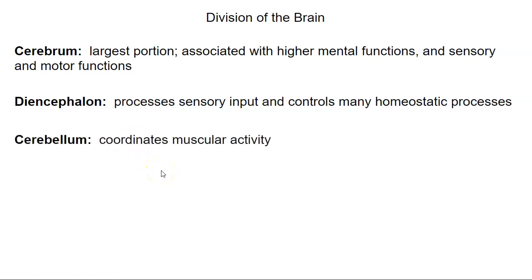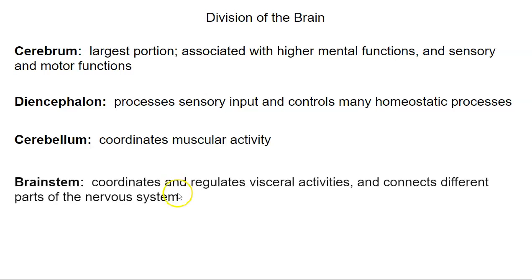The cerebellum, sometimes called the small brain, coordinates muscular activity. And then the brainstem — that's the midbrain, the pons, and the medulla oblongata — coordinates and regulates visceral activity, such as activities in your intestines, heart, and lungs. It also connects different parts of the nervous system.